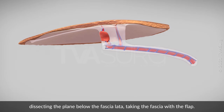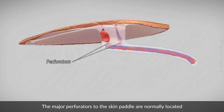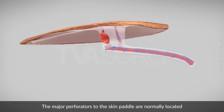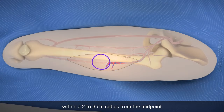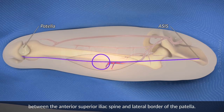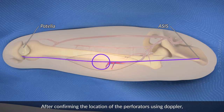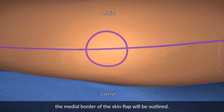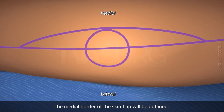Dissecting the plane below the fascia lata, taking the fascia with the flap. The major perforators to the skin paddle are normally located within a 2-3 cm radius from the midpoint between the anterior superior iliac spine and lateral border of the patella. After confirming the location of the perforators using Doppler, the medial border of the skin flap will be outlined.